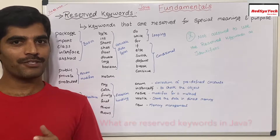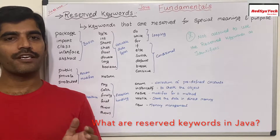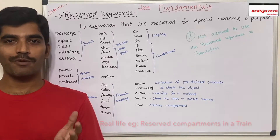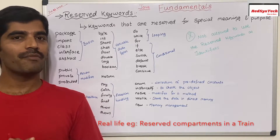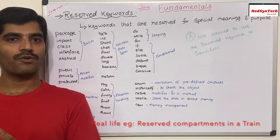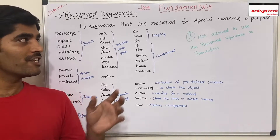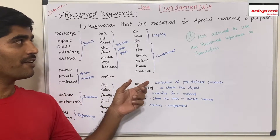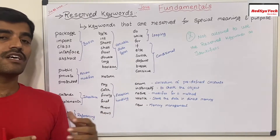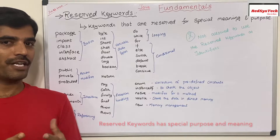Let me start with a quick story. Let's say you want to go on a train and you see some compartments which are reserved for someone. Those compartments are specific for someone who already reserved it for some specific use. Similarly, in Java, this language also has some list of words — keywords — which are reserved by Java for special purpose and meaning.